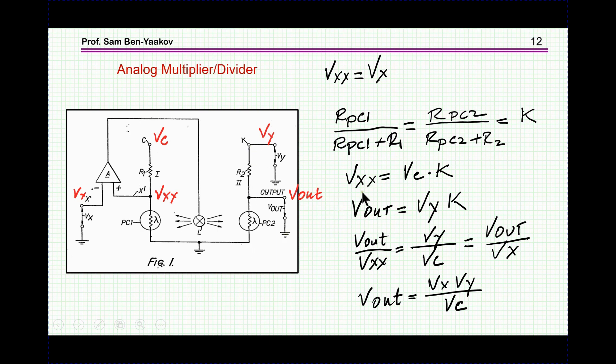So now dividing these two expressions, one by the other, we get this. And then eventually we come up with this expression that says that Vout is equal to Vx times Vy over Vc. So this circuit is in fact calculating this expression.